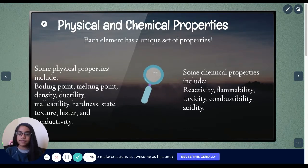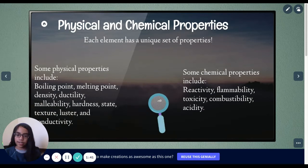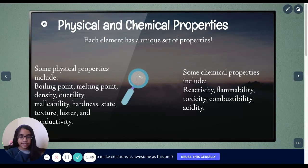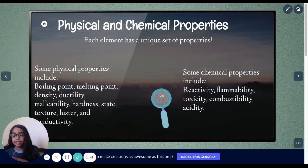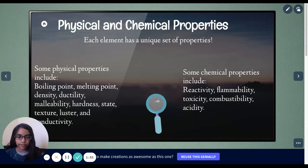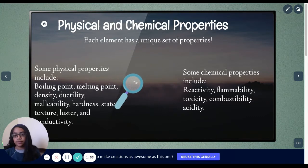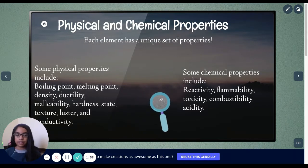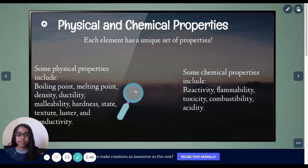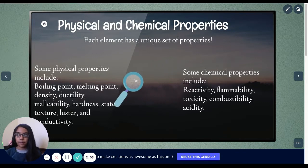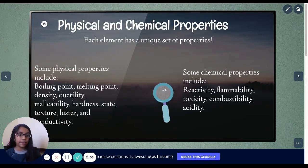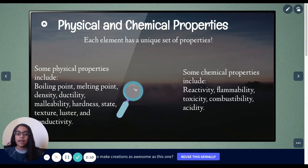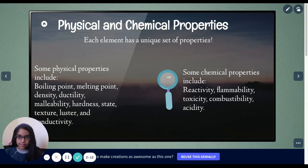Luster, if you don't know this, it's basically how shiny it is. Some chemical properties include reactivity, flammability, toxicity, and combustibility. Also acidity. Reactivity is when the elements react. Flammability is the ability to be flammable. Toxicity is the ability to be toxic. Combustibility is when it explodes or if it explodes. And acidity is if it's acid.